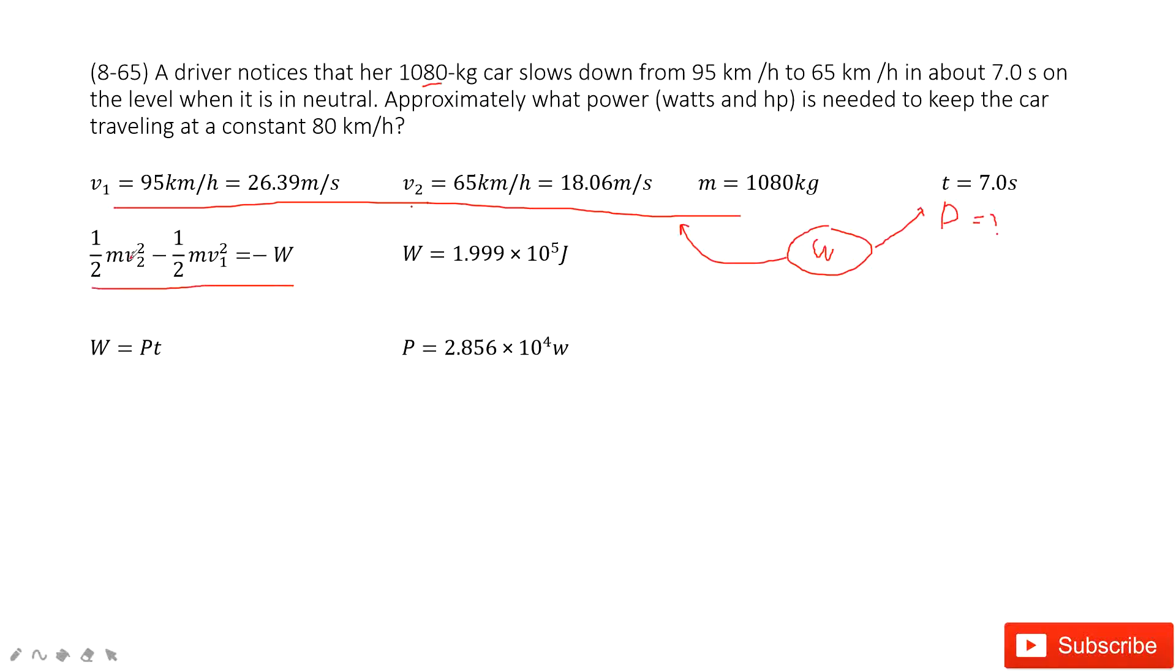So in this equation, you can see final kinetic energy minus initial kinetic energy equals the net work. The mass and v are given, so very easily you can find the work.